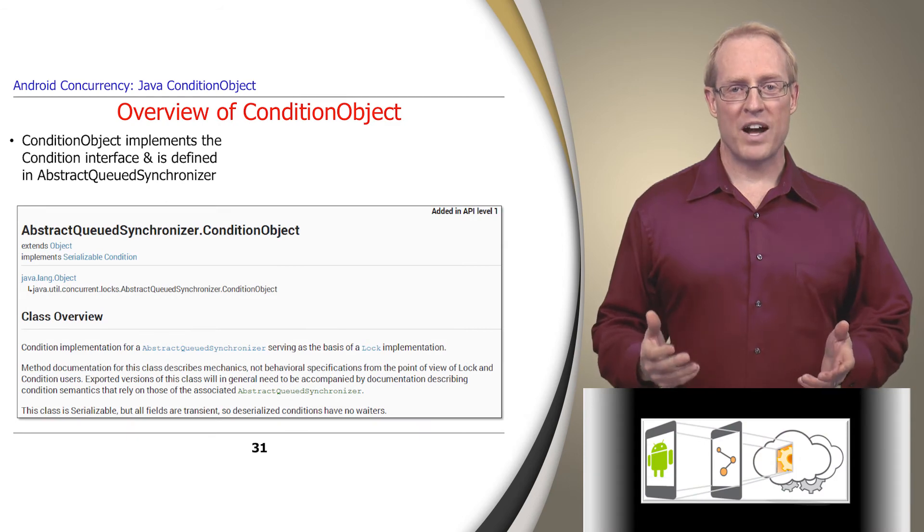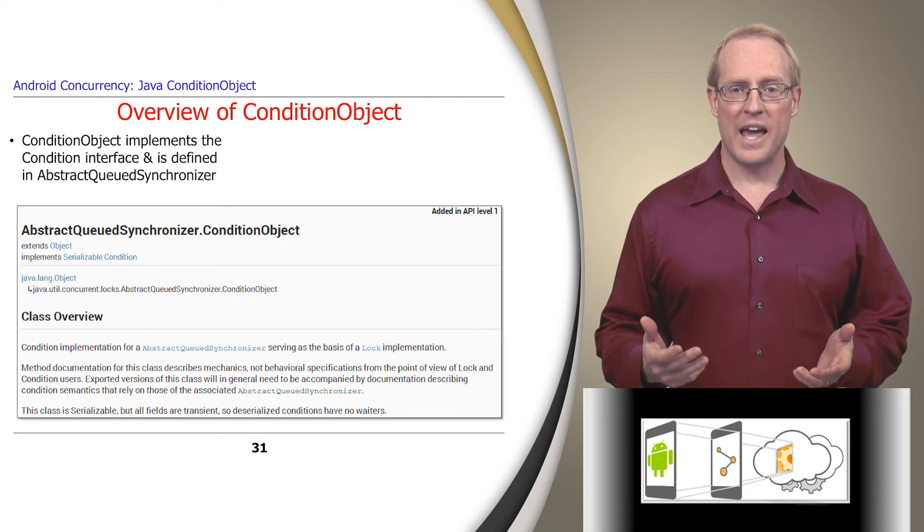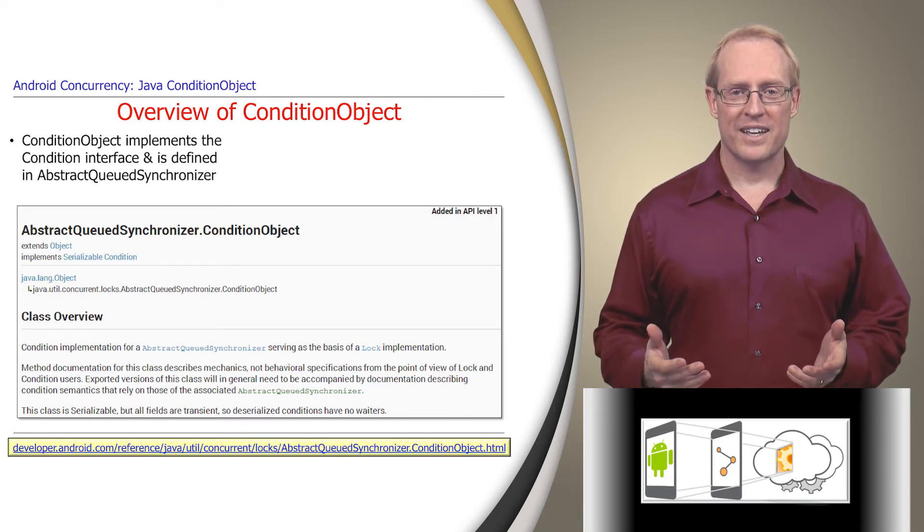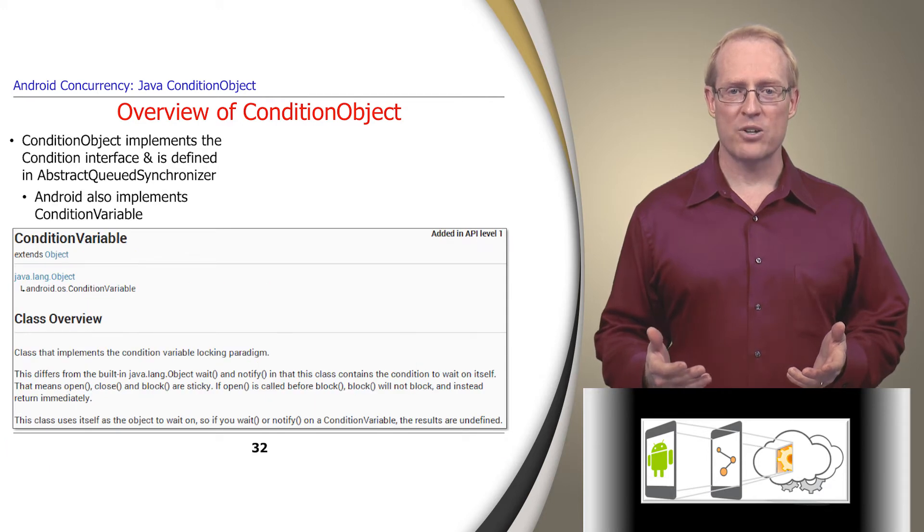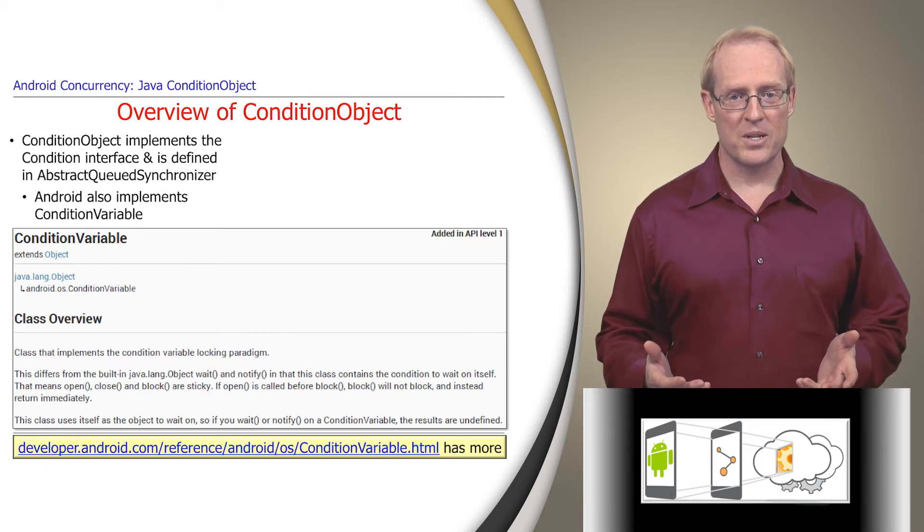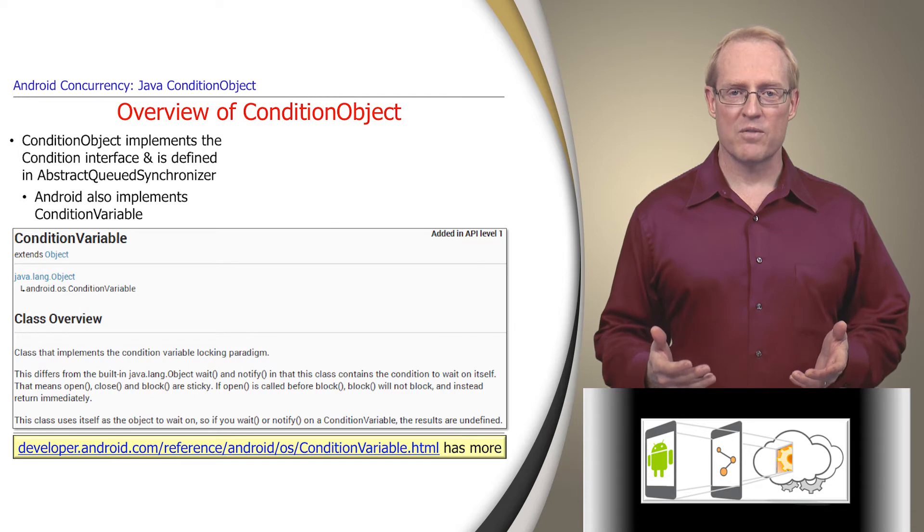Java provides condition variables via its condition object class, which implements the condition interface within the abstract queued synchronizer class. Android also provides a non-standard condition variable class, which implements the condition variable concept, though the semantics are somewhat different. So we'll focus on condition objects in this video.